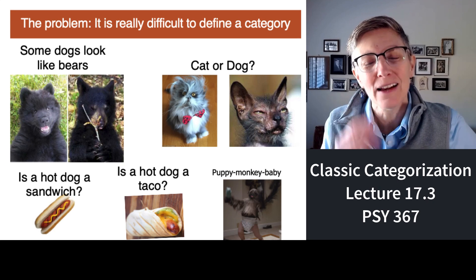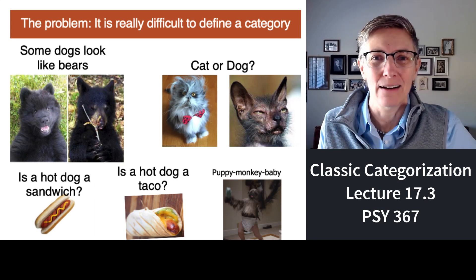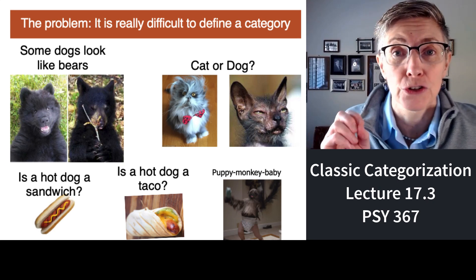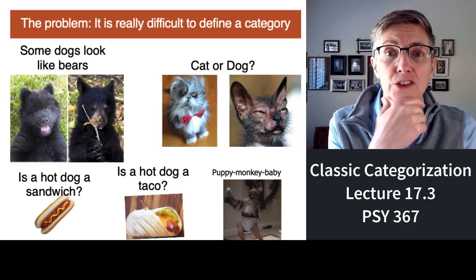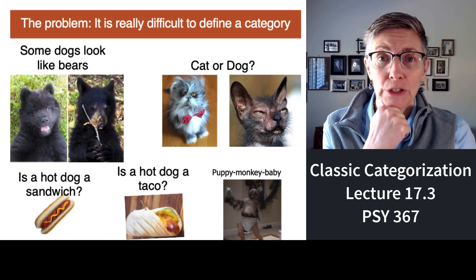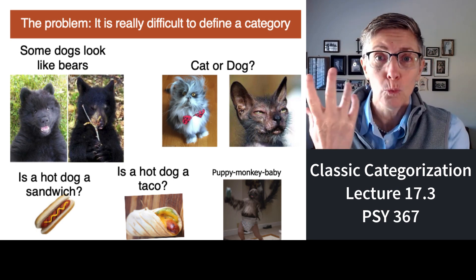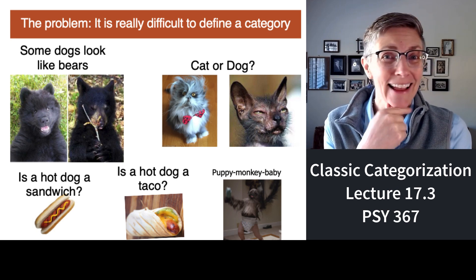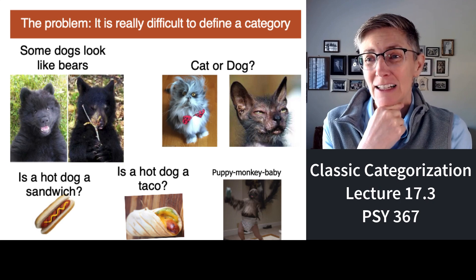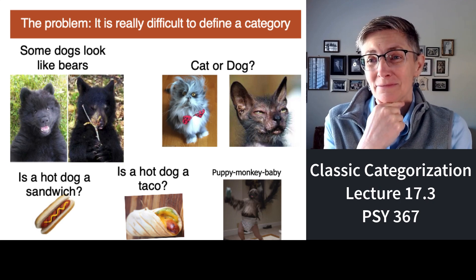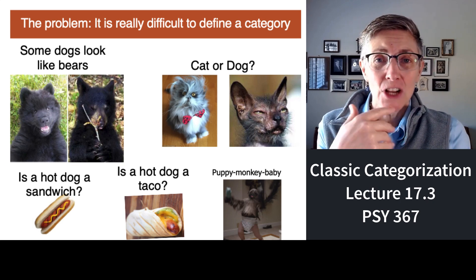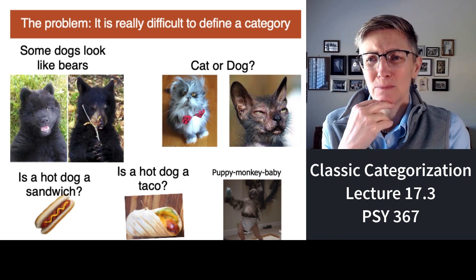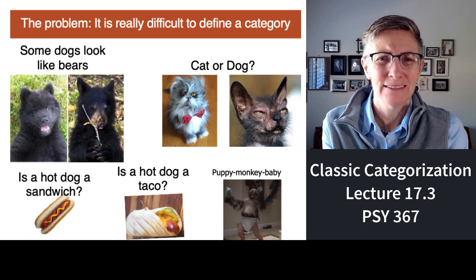Imagine your Twitter feed explodes with news that there's a bear sighted in your neighborhood. What's a bear? Here are two drawings — you tell me which one's the bear. Not obvious, right? How do you define a cat and not a dog? You could find a cat that looks hard to categorize.